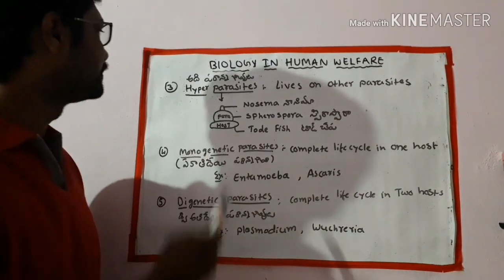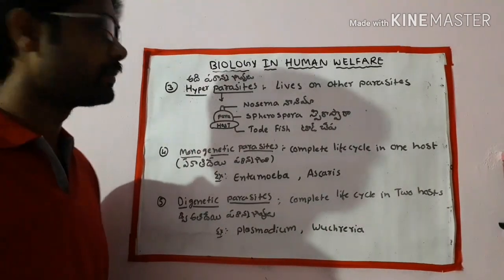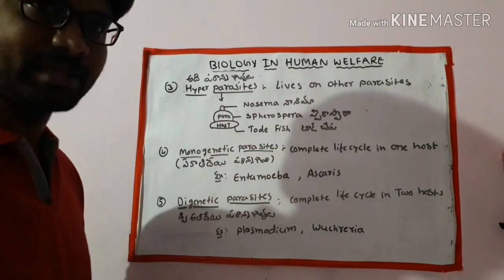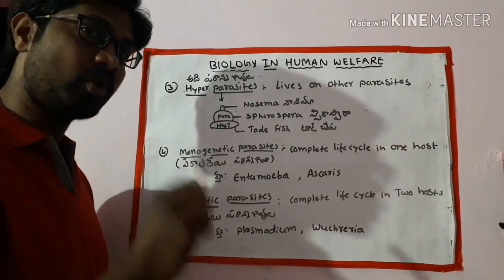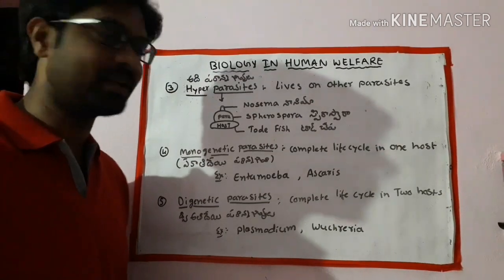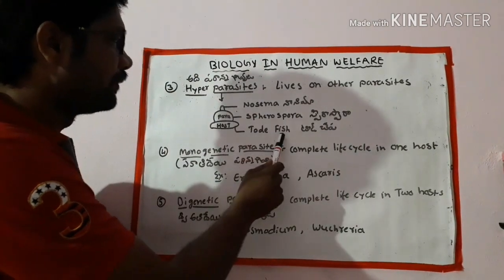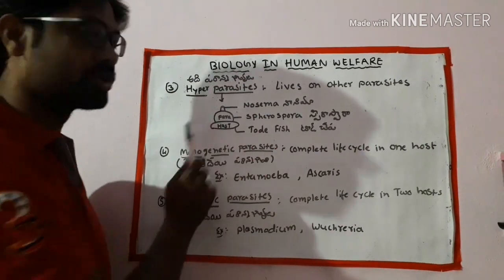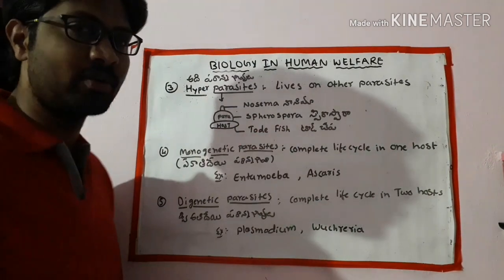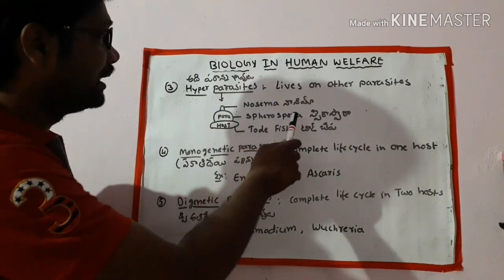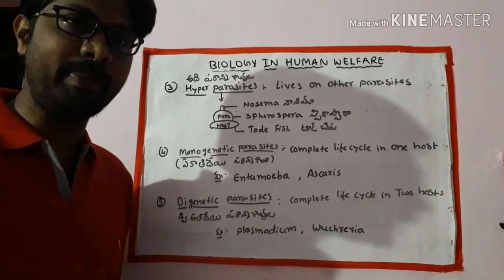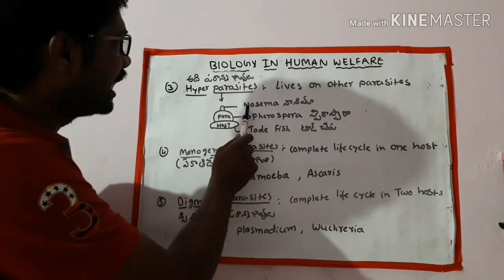The third type is hyperparasites. Hyperparasites live on other parasites — the parasite itself becomes a host. For example, toadfish is a host; Spirosporan is a parasite on toadfish. Nosema is a hyperparasite on the Spirosporan parasite. So Nosema is called a hyperparasite.